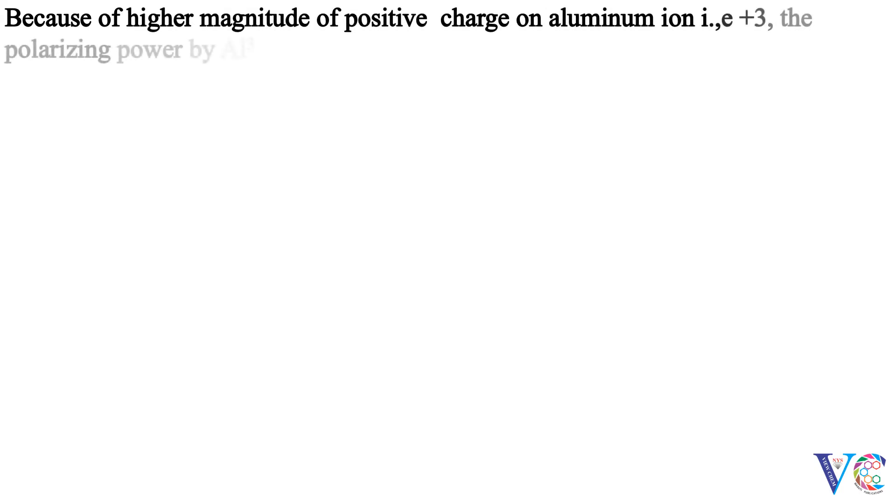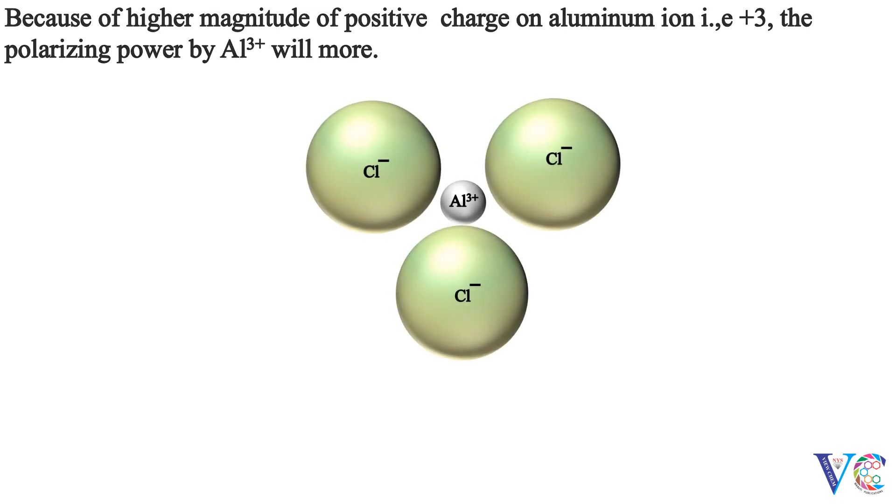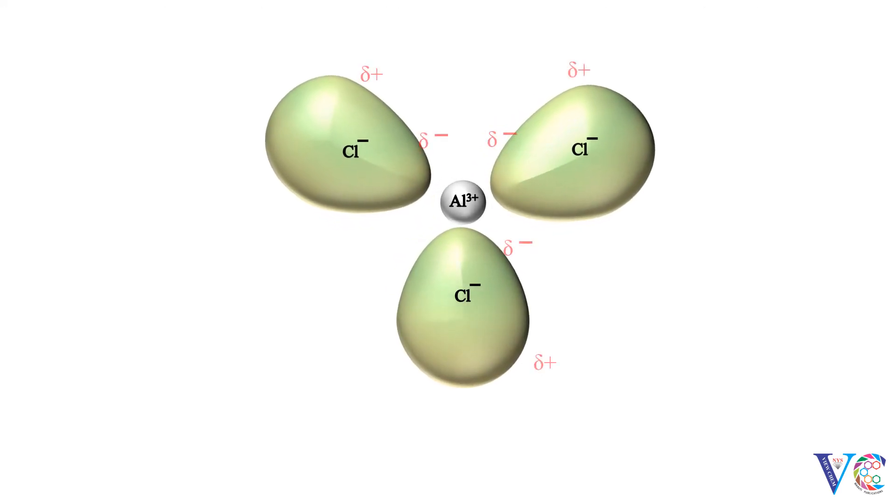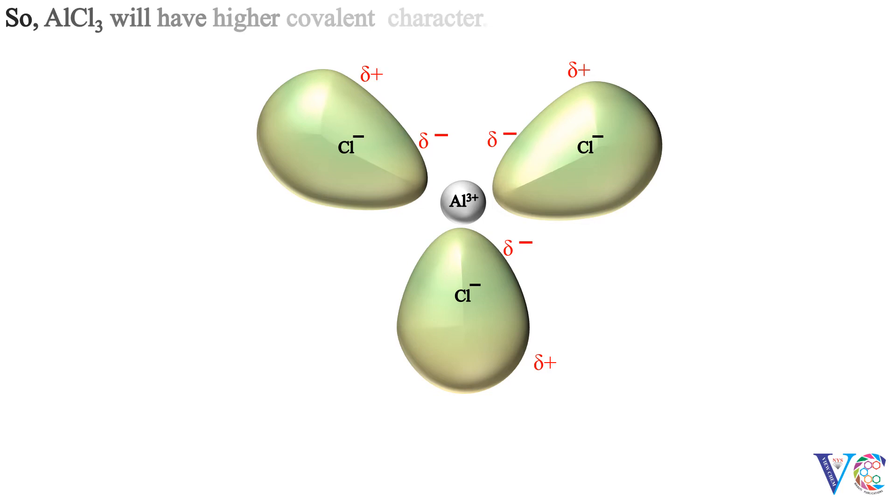Because of higher magnitude of positive charge on aluminum ion, that is +3, the polarizing power by Al3+ will be more. So AlCl3 will have higher covalent character.